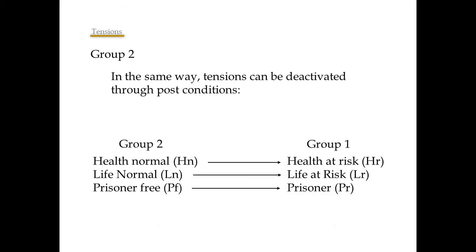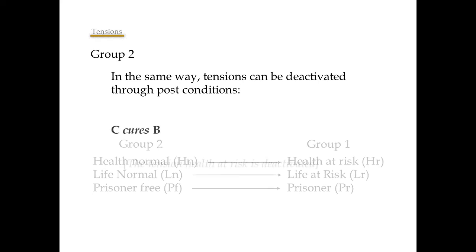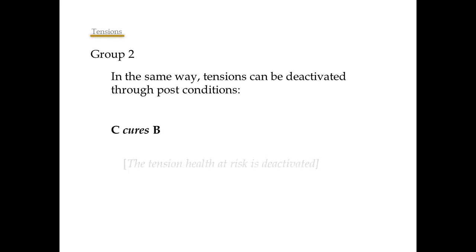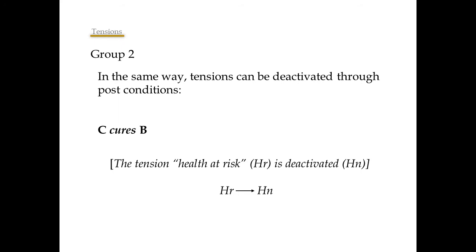Now, let's talk about group 2. Tensions can be deactivated through postconditions. For example, if we have the action C cures B, the consequence of that action is that the tension health at risk is deactivated. That is, character B is healthy again.